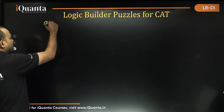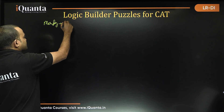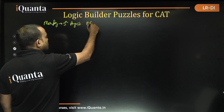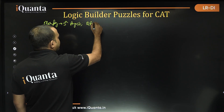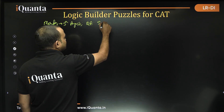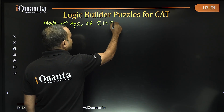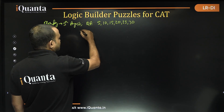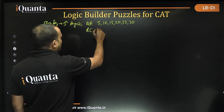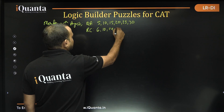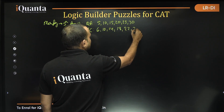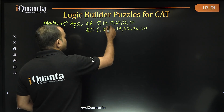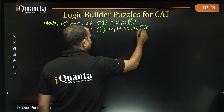If Monday is on 5th August, QA will be taught on: 5th, 10th, 15th, 20th, 25th, and 30th. RC will be taught on: 6th, 10th, 14th, 18th, 22nd, 26th, and 30th. Once again, we have 2 common days — 10th and 30th — so this case is also not valid.